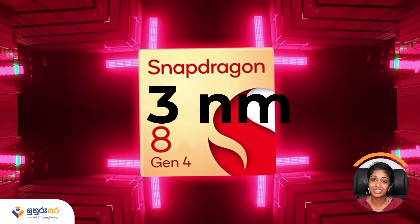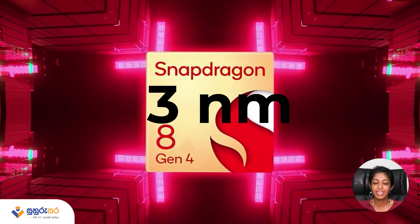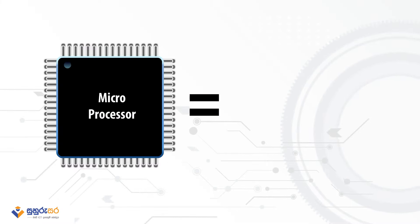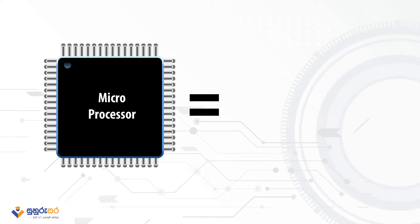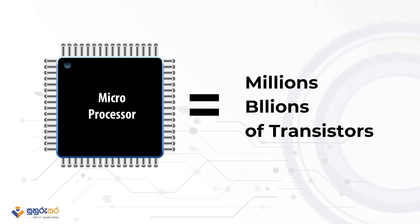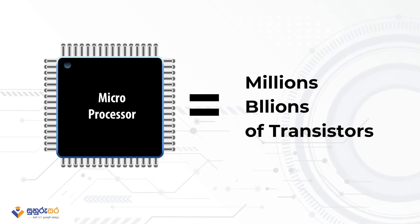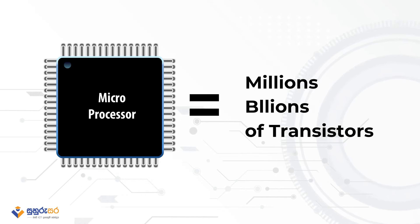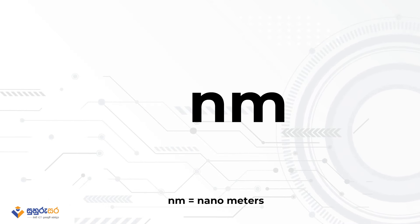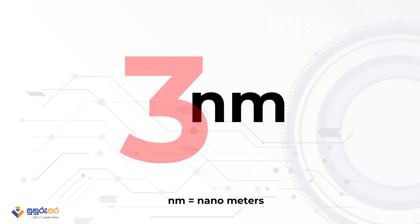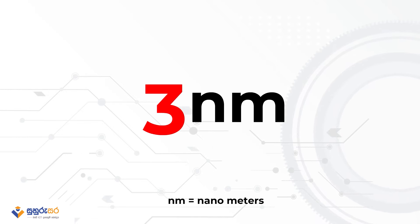To understand the process, we have units from the transistors — 7 nanometers, 5 nanometers, 4 nanometers, 3 nanometers.